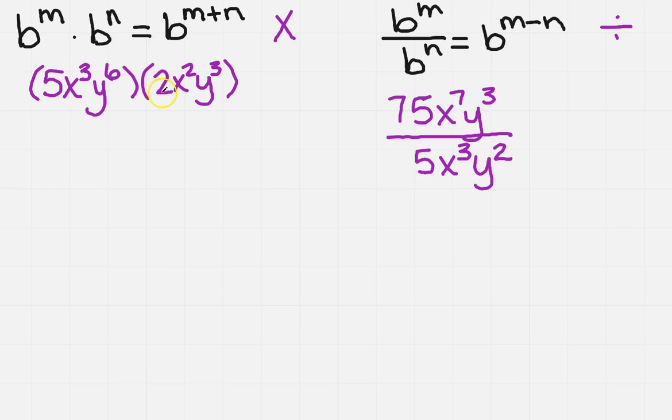So I'm going to multiply things that look alike. So 5 times 2 is 10. Now, for my exponents, it says I need to add them. So this is going to be 3 plus 2, and Y, 6 plus 3. So the 10 stays the same, and then it's going to be X to the 5th, Y to the 9th. And that's your final answer.